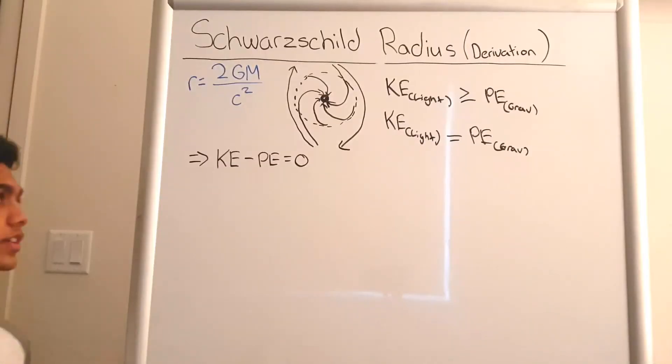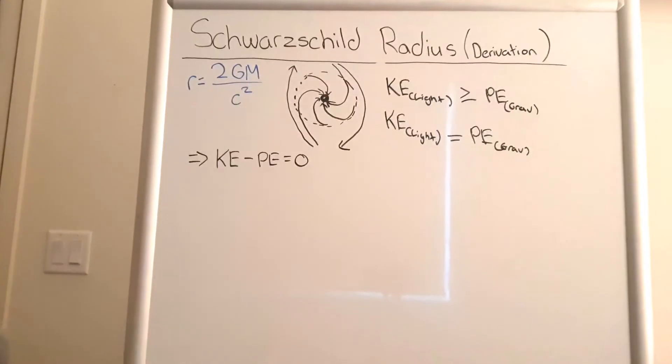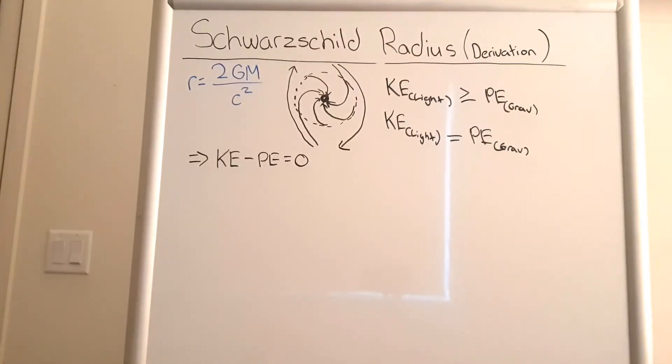So we already know the kinetic energy equation is one half m v squared. And since the potential energy is going to be gravitational potential energy, we're going to be using the equation G big M times small m over r.